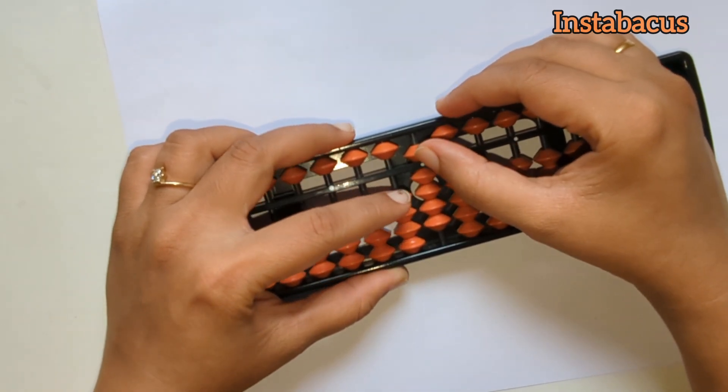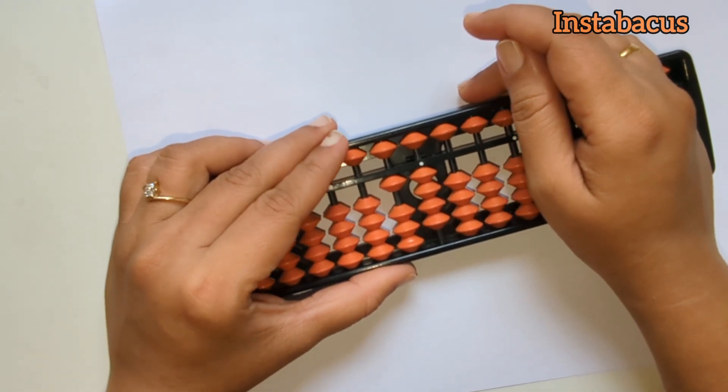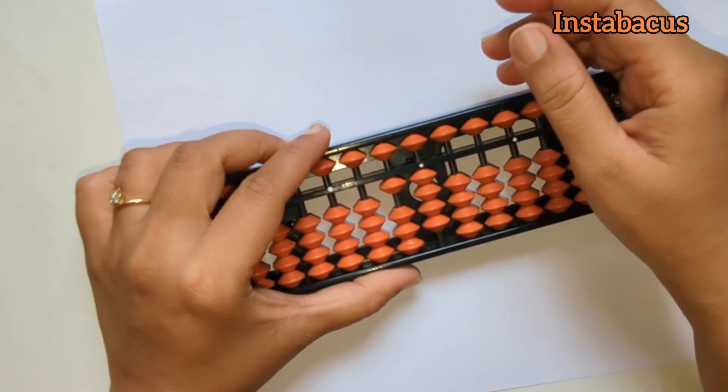Now this is nine on our abacus, and to add five to it we are going to do something like this. So nine plus five turns out to be fourteen. That's right.